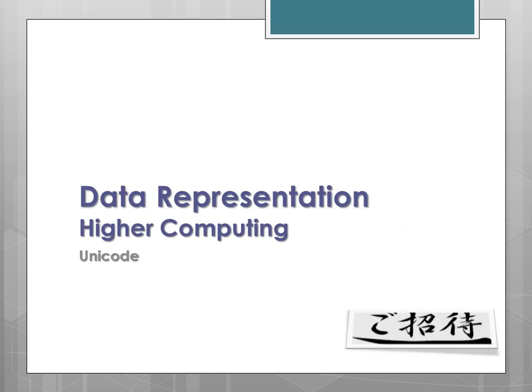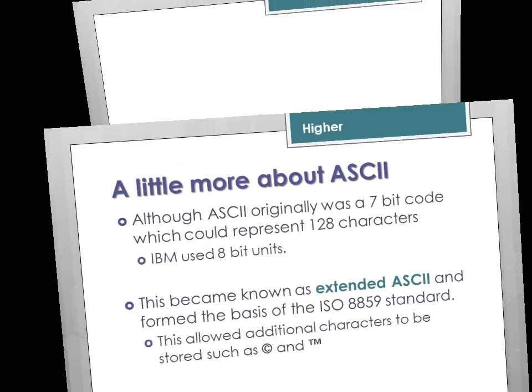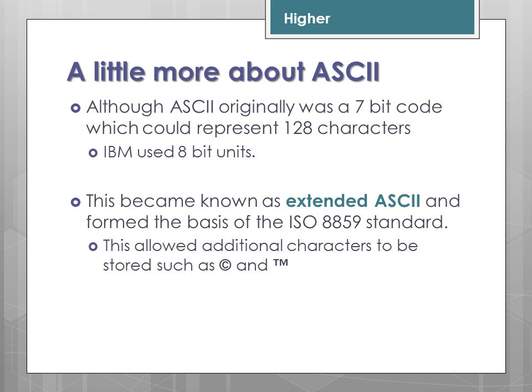Higher content. A little more about ASCII in detail: although ASCII originally was a 7-bit code which could represent 128 characters, IBM, also known as Big Blue, used 8-bit units. This became known as Extended ASCII and formed the basis of the ISO 8859 standard. This allowed additional characters to be stored, such as the copyright symbol and the trademark.